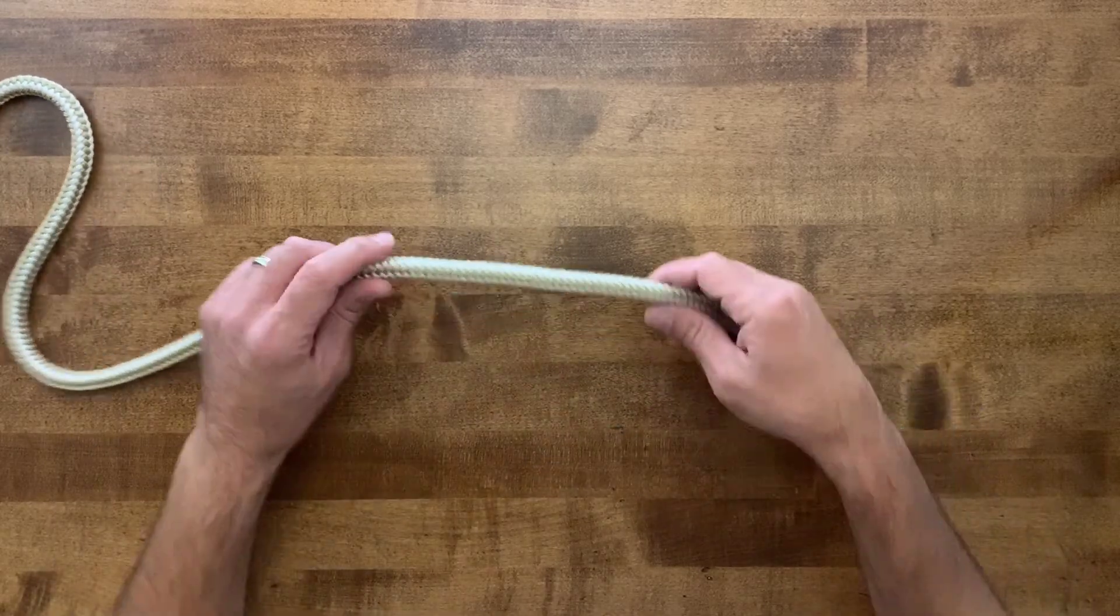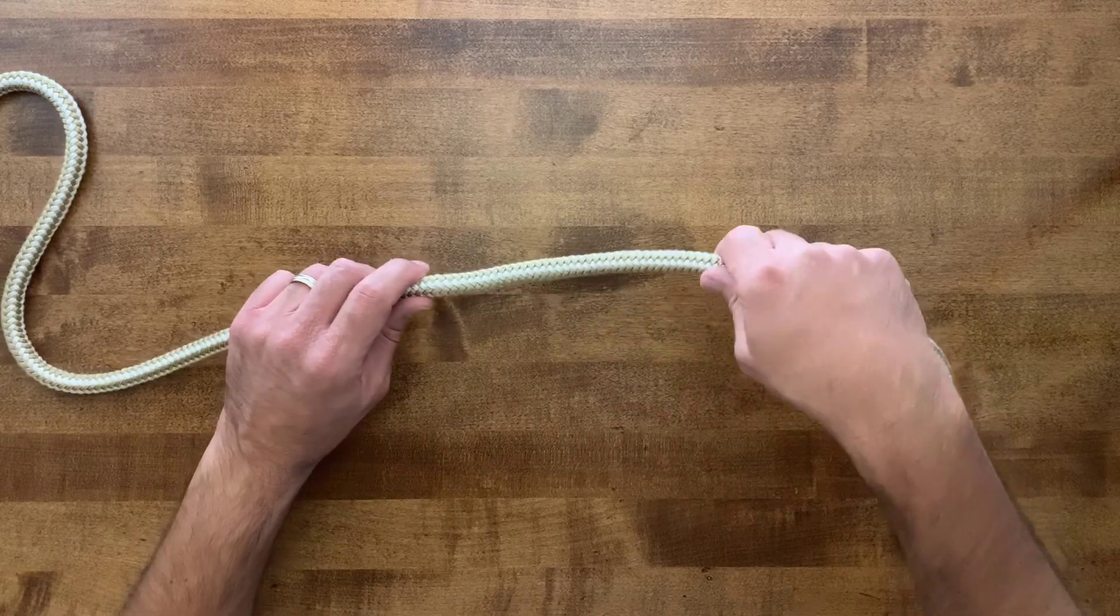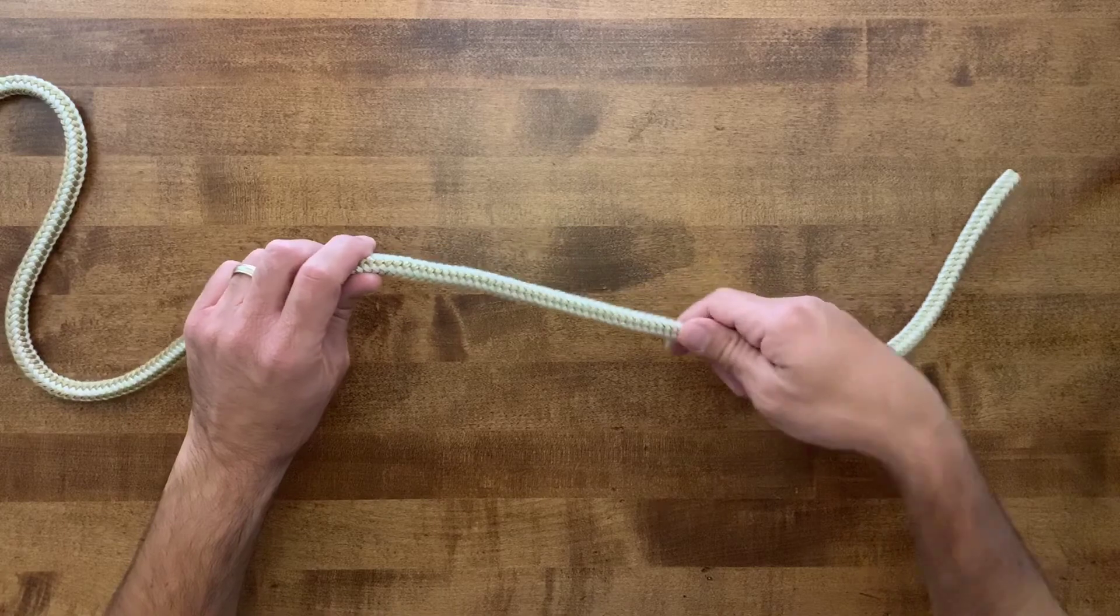Again, super simple to make. What we do is we want to make an overhand loop. We twist two, just as if we're throttling a motorcycle. Twist two.